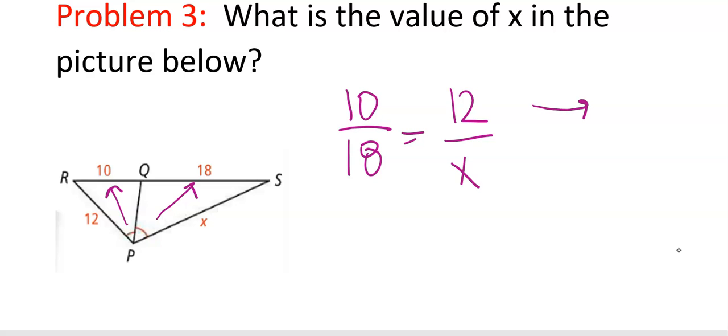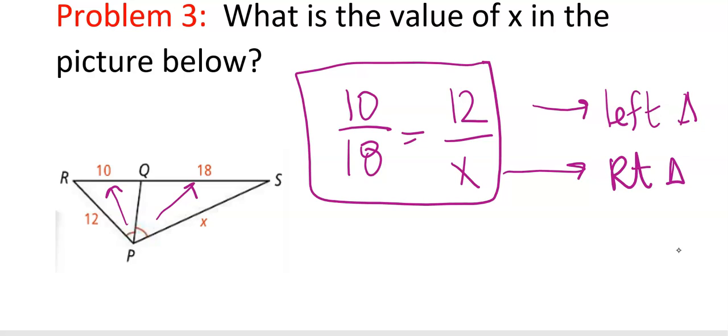So these are from the left triangle, these are from the right triangle. And that's kind of how I set them up every time. Again, it's a very basic cross multiplication question, so you don't have to show any work. You do have to show your setup though. 18 times 12 divided by 10.